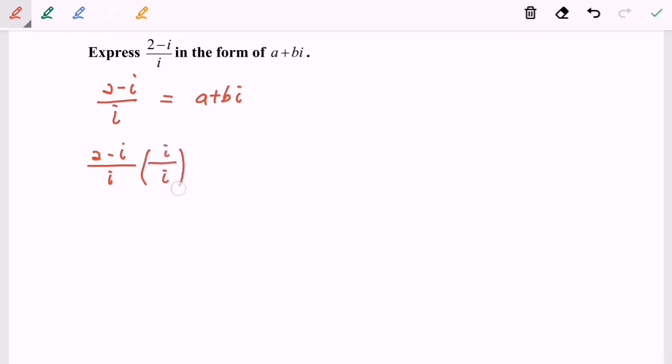Why? Because our objective is to rationalize the denominator, meaning that we make it become a real number so that our objective will be achieved.